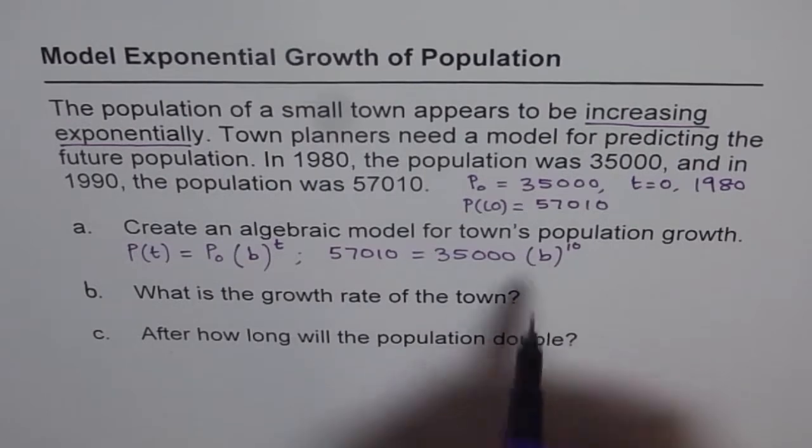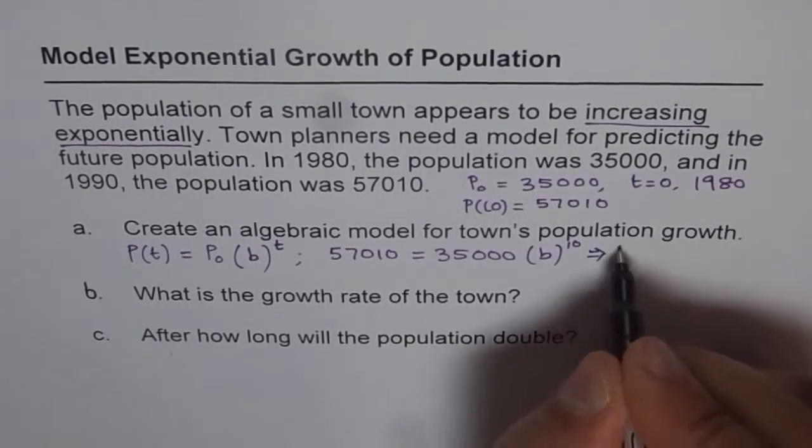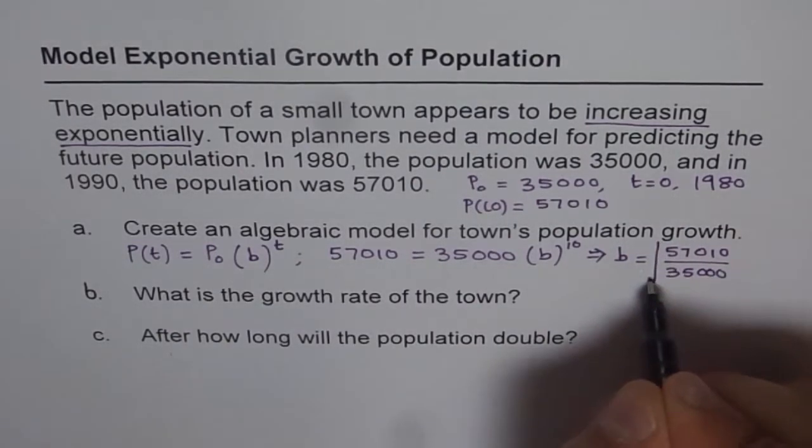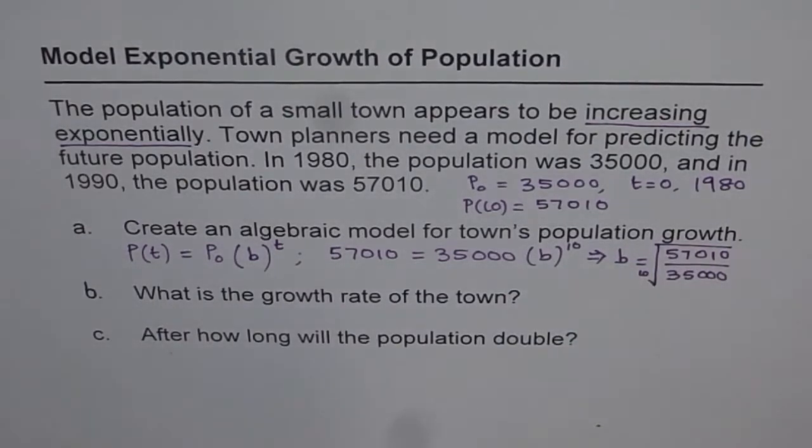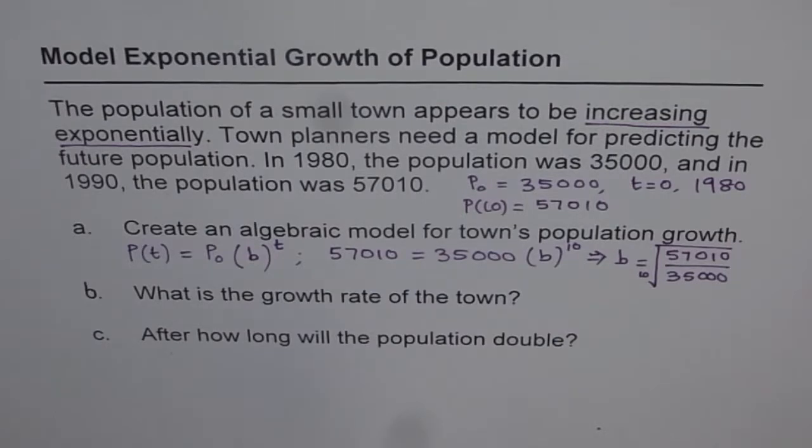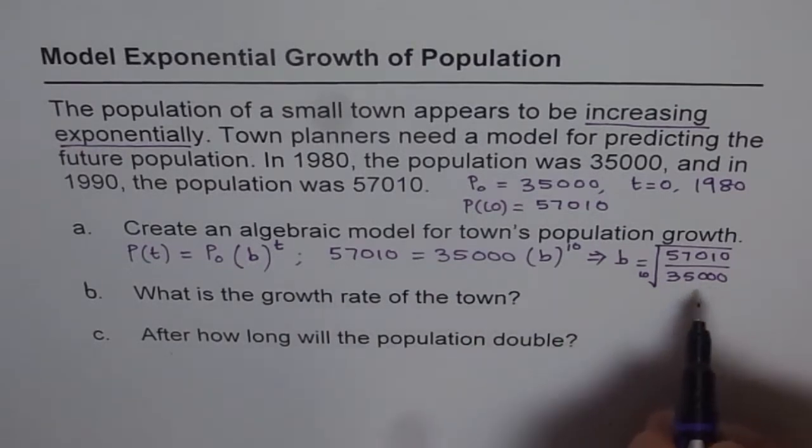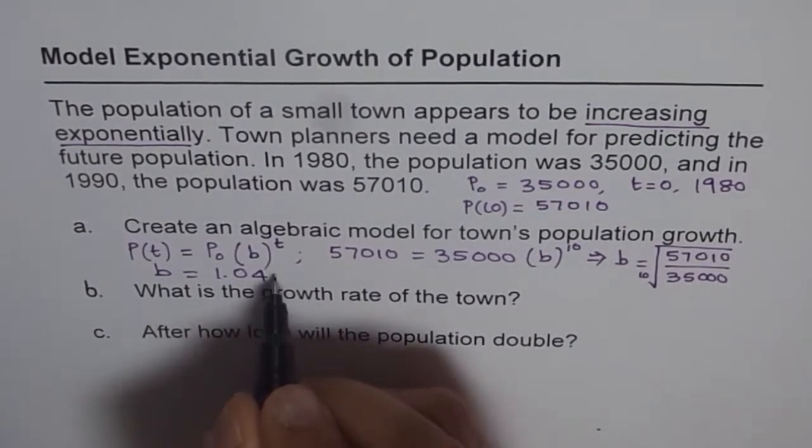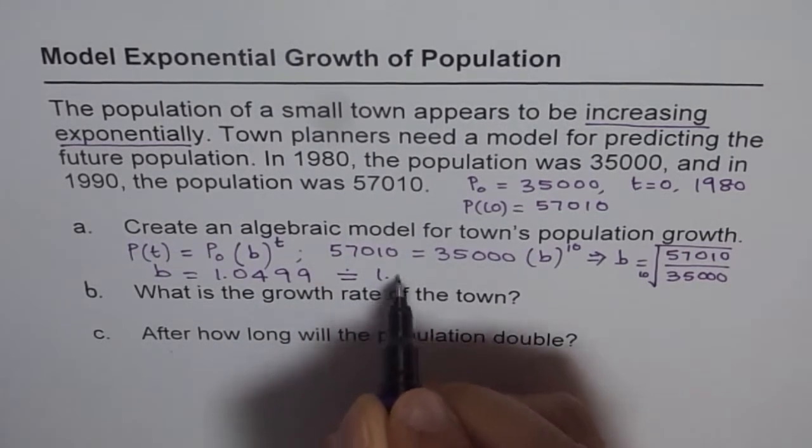Now from here we can find b. This gives us the value of b as equal to 57,010 divided by 35,000 to the tenth root. So let us use calculator to figure this answer. So we have 57,010 divided by 35,000 exponent one tenth. That is equal to 1.0499, which we can round to 1.05.